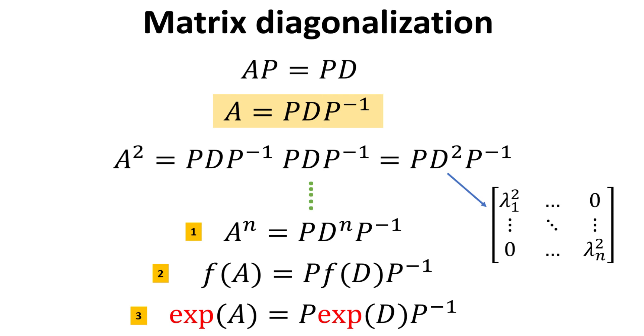Similarly, this will also apply to a polynomial function of A as shown in equation 2. And it should also apply to an exponential function of A. As we shall see, these identities are very useful in quantum mechanics.